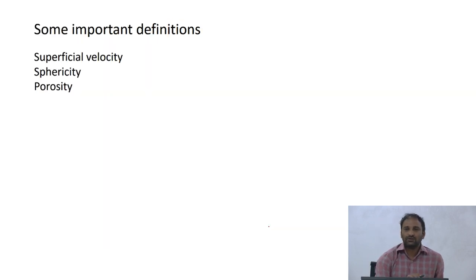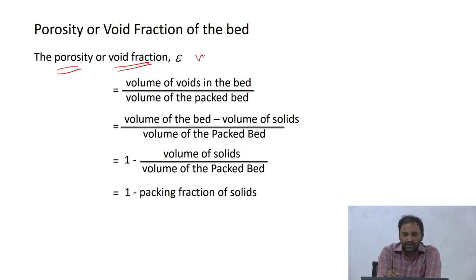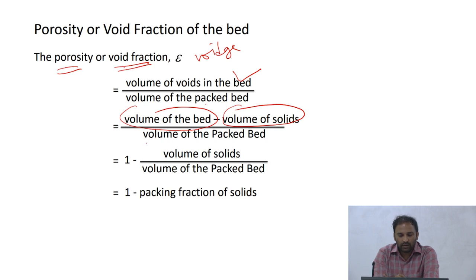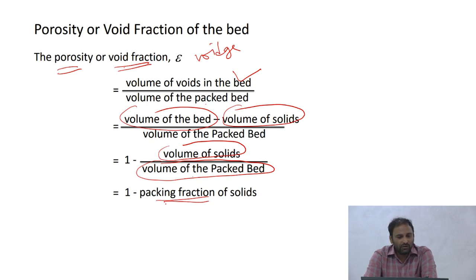Porosity, also called void fraction or voidage, is defined as the volume of voids in the bed divided by the volume of the packed bed. Volume of voids equals volume of the bed minus volume of the solids. Therefore, porosity equals 1 minus volume of solids divided by volume of packed bed, where volume of solids divided by volume of packed bed is the packing fraction.